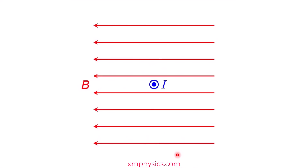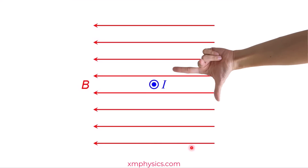Try this one now. Magnetic field is leftward, current coming out of the screen. Point your index finger leftward, then rotate your hand until your middle finger is pointing out of the screen. The thumb is pointing downward. So that's the direction of the magnetic force.